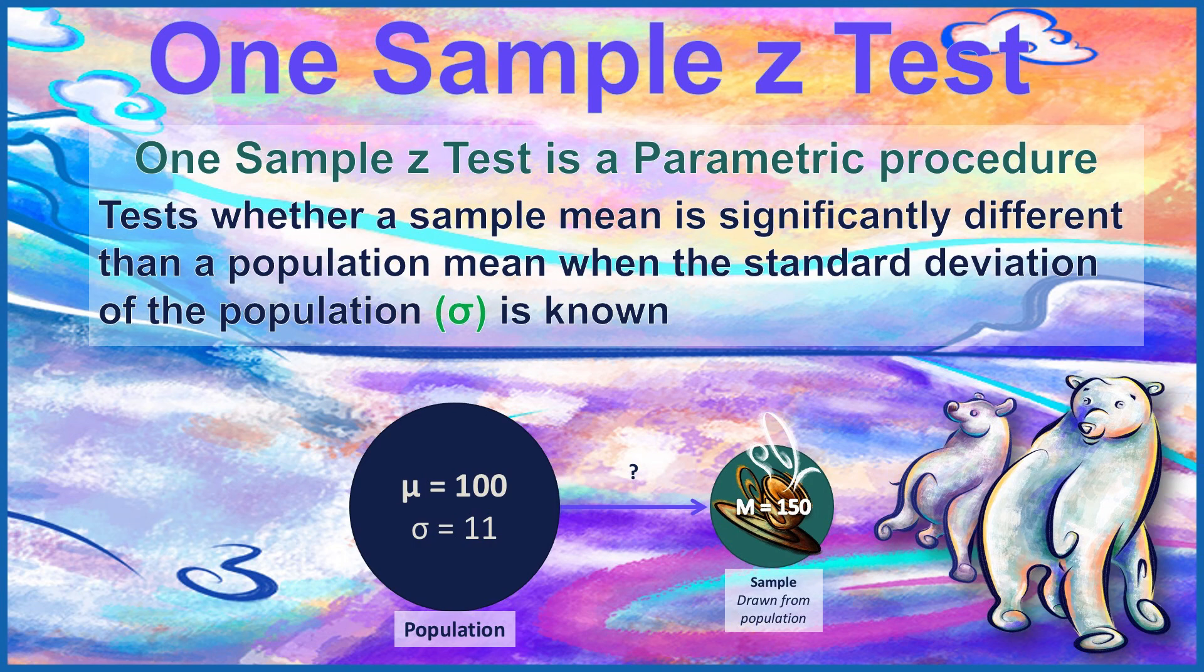Now in this example with the polar bears, you can see we have a population that has a mean of 100, and a sample drawn from that population. The population standard deviation is known. It's a measure of 11. The sample will also have a standard deviation, but we won't need that for any of our calculations if we know the mean and standard deviation of the population, the mean of the sample, and the sample size. That's where we're going to use that one-sample z-test.